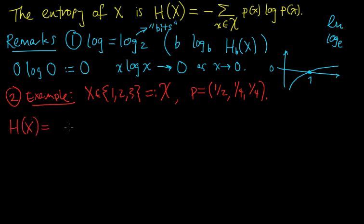Script X has three elements. We've got three terms. The first term is minus 1/2 log 1/2, minus 1/4 log 1/4, minus 1/4 log 1/4.